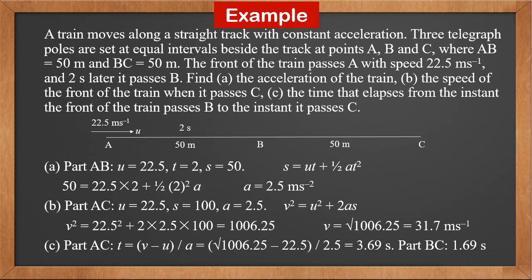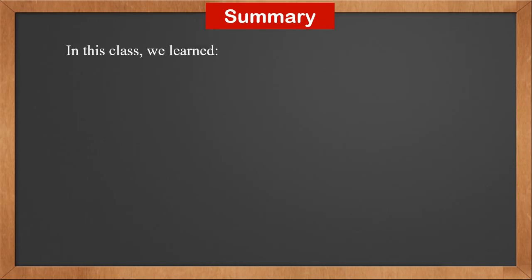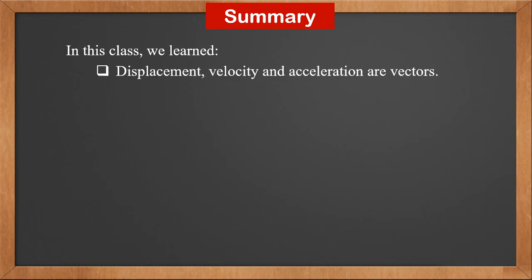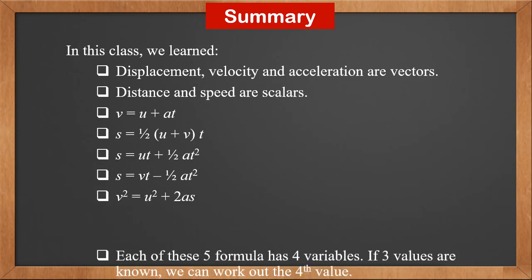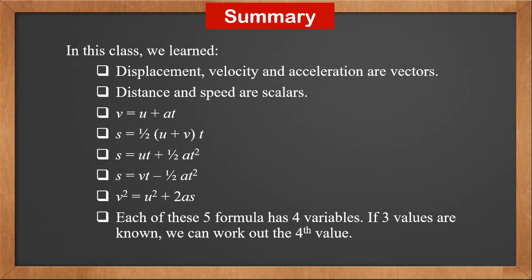We can see that there are usually 3 known values and we are asked to find out the fourth one. There are 5 formulas to choose from, and each of them has 4 variables. We need to choose the right one to use based on which 3 are given and which one needs to be found. In this class we learned displacement, velocity, and acceleration are vectors, while distance and speed are scalars. For constant acceleration in a straight line: v equals u plus at; s equals half (u plus v) times t; s equals ut plus half at squared; s equals vt minus half at squared; v squared equals u squared plus 2as. Each of these 5 formulas has 4 variables — if 3 values are known, we can work out the 4th.